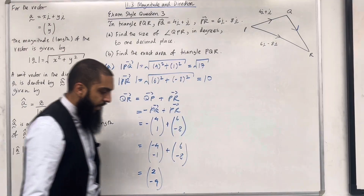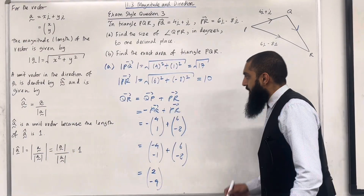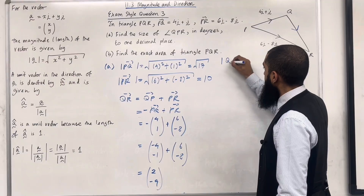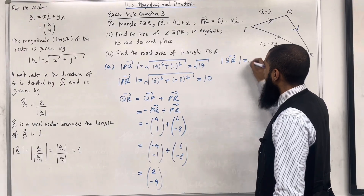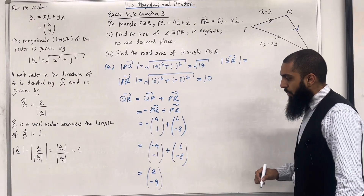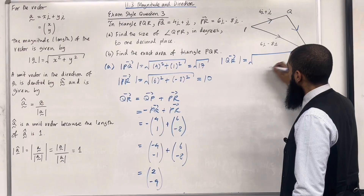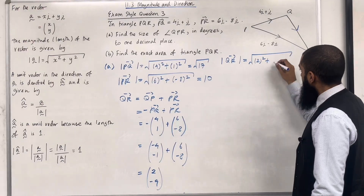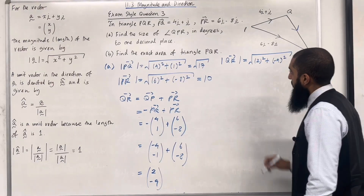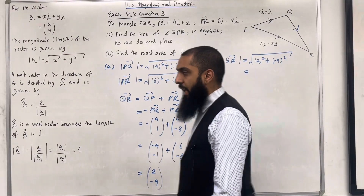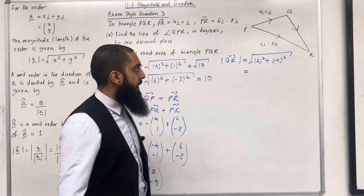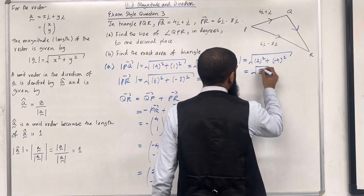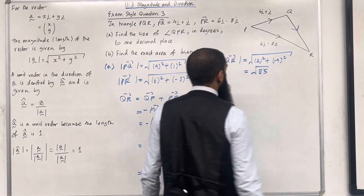Now I can work out the magnitude of QR. The magnitude of QR = √(2² + (−9)²). Putting this into the calculator gives √85.